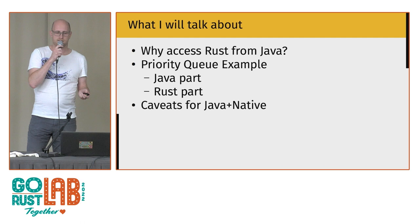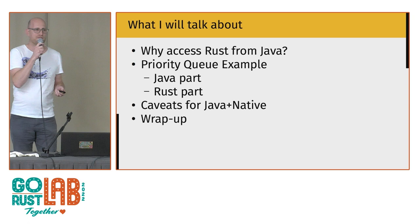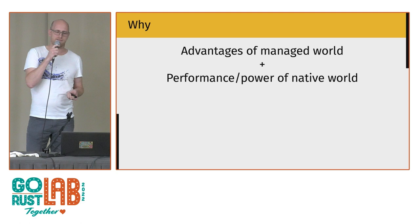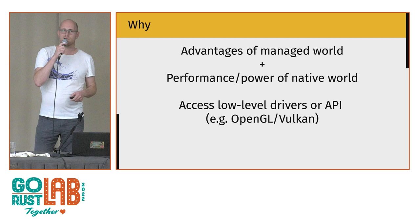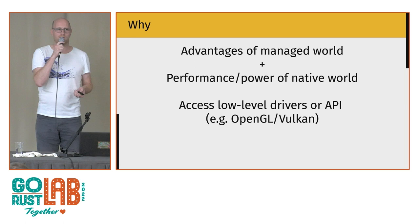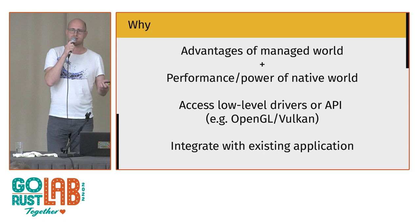Now let's look at how to do the same thing in Java. I'll talk about why it's interesting to access Rust from Java, show the priority queue example with the Java part first and Rust part second, demonstrate some caveats when using Rust with native Java code, and give a short summary of the most important things to remember.